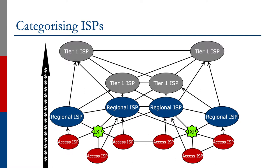Notice the position of the Internet Exchange Point. The Internet Exchange Point is very much for connecting the access providers to each other, so they don't have to use transit via the regional or tier 1 provider simply for local traffic. Internet Exchange Points are very common and very popular around the globe.